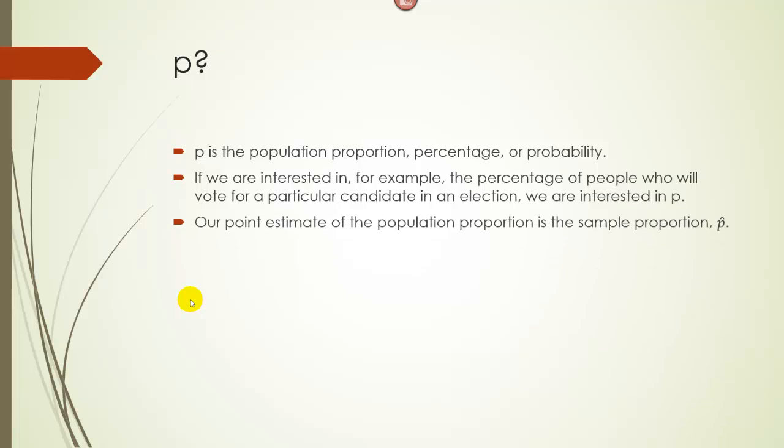Our point estimate for the population proportion is the sample proportion P hat. P hat is our sample proportion, just like X bar was our sample mean. Often if you have a little symbol over a letter or Greek letter, it's indicating it's a sample estimate.